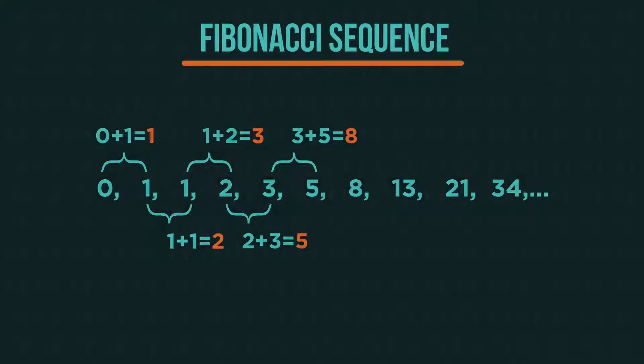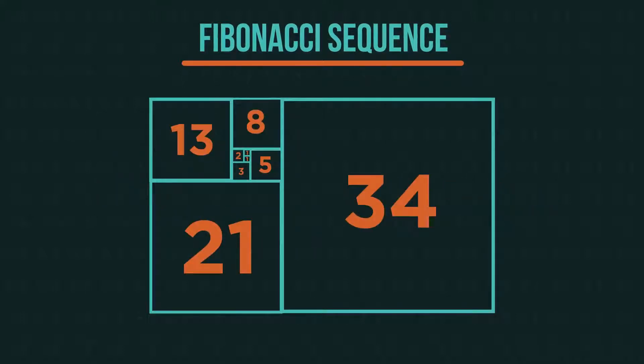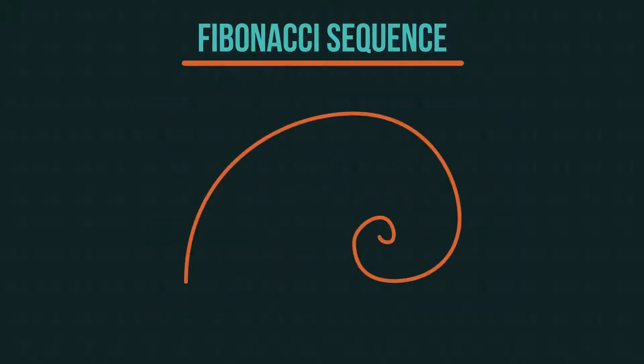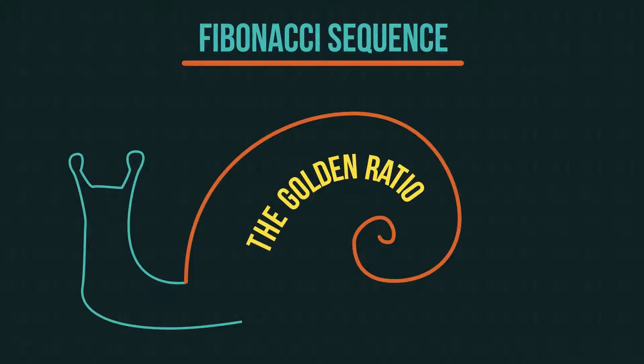Such as, if you make squares of Fibonacci sizes, you get a spiral. It's also linked to the golden ratio and is seen throughout nature.